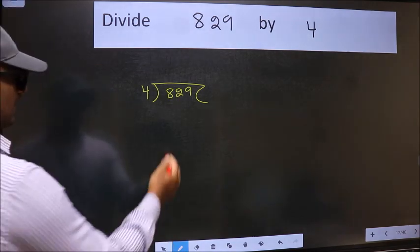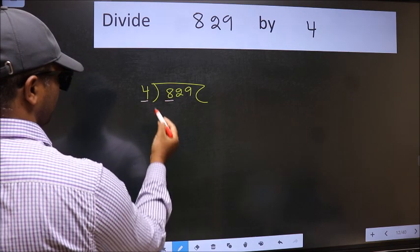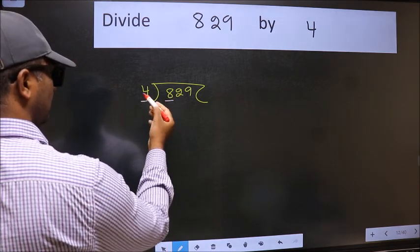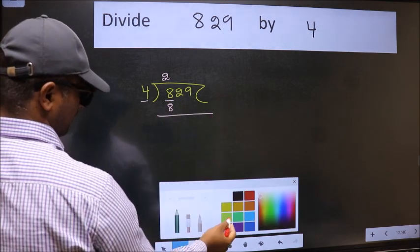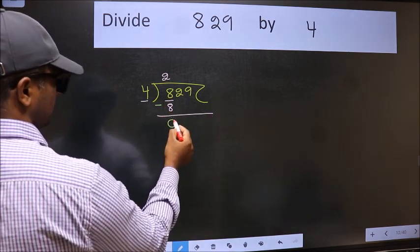Next. Here we have 8 and here 4. When do we get 8 in the 4 table? 4 twos, 8. Now we should subtract. We get 0.